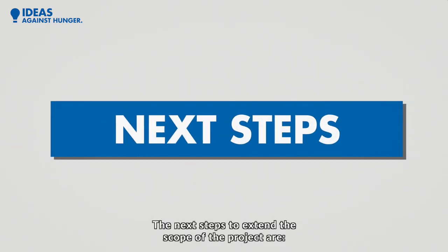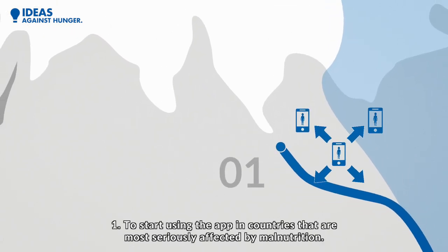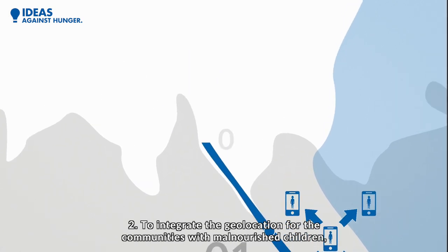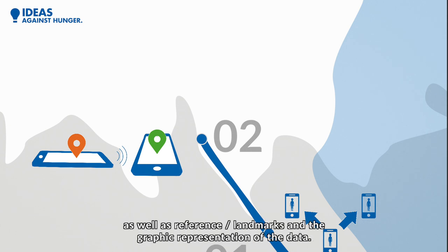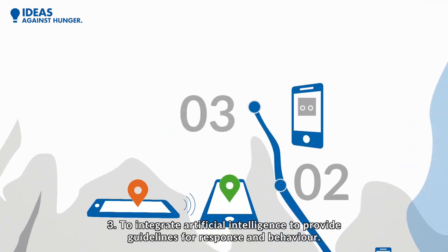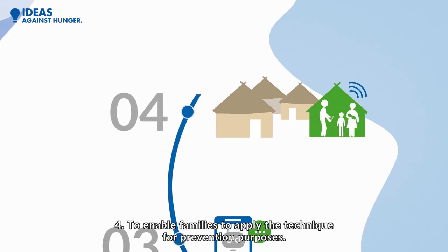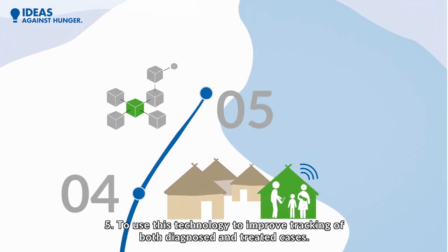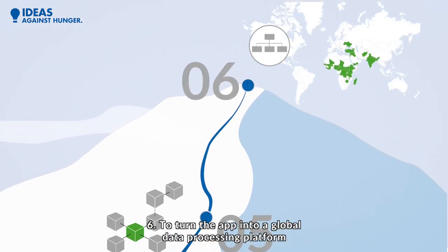Next Steps. The next steps to extend the scope of the project are: to start using the app in countries most seriously affected by malnutrition; to integrate geolocation for communities with malnourished children, as well as reference landmarks and graphic representation of data; to integrate artificial intelligence to provide guidelines for response and behaviour; to enable families to apply the technique for prevention purposes; to use this technology to improve tracking of both diagnosed and treated cases; and to turn the app into a global data processing platform.